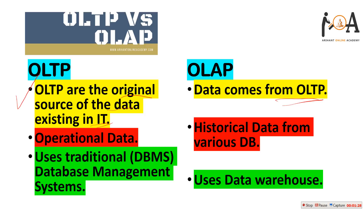In OLAP, data comes from OLTP processing. After processing data from so many resources and databases, data comes to OLAP — so data is not original here. This data in OLTP is called operational data, meaning it is the original data currently on your server. In OLAP, it is historical data gathered from various databases and different OLTP processes.